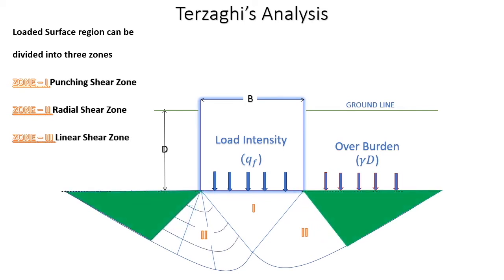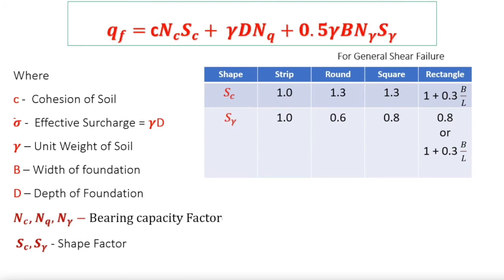The Terzaghi bearing capacity equation is then used to calculate the overall bearing capacity resistance. This equation considers the cohesion of the soil, the surcharge, and the foundation self-weight. Empirical bearing capacity factors N and shape factors S are then applied to each of these calculation elements.